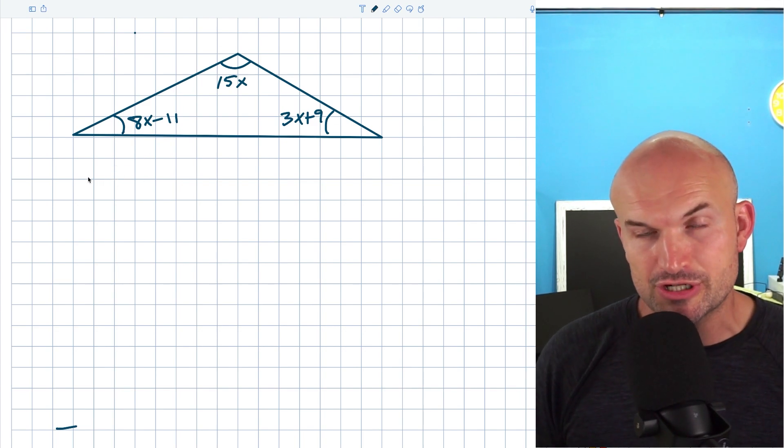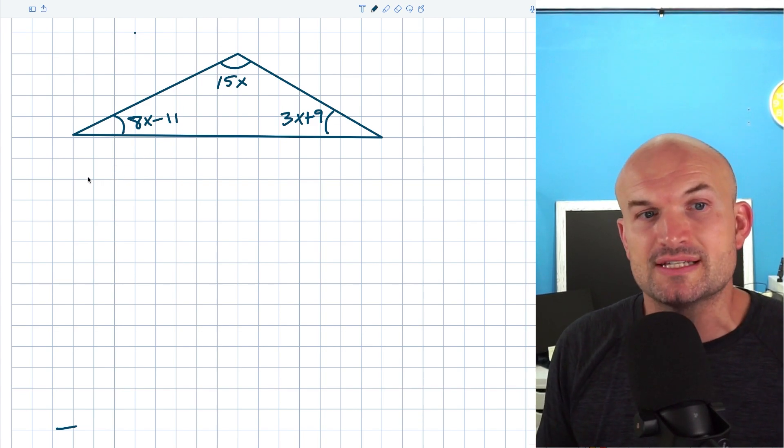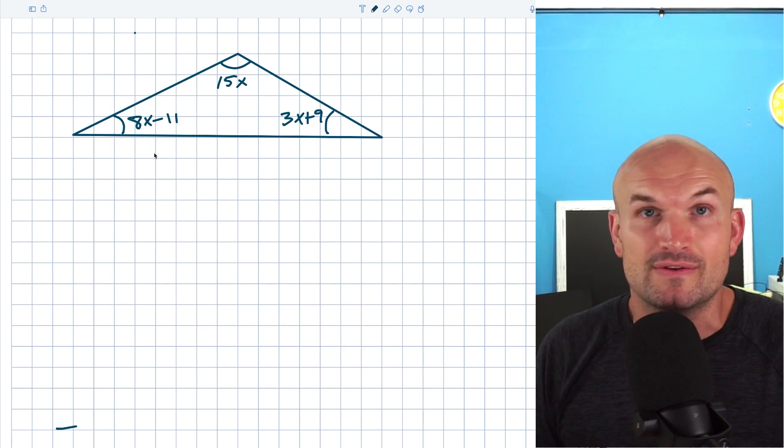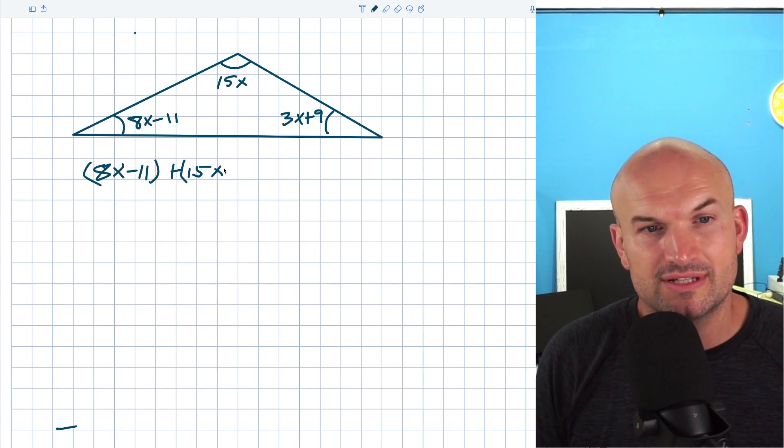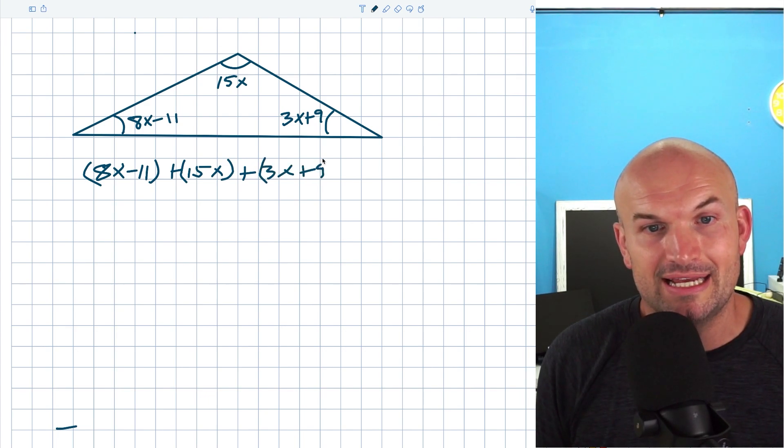Typically when I first write the relationship or when I'm first having students do this, I'll have them use parentheses just so they can see that they're writing the equation correctly. So in this example, I'll have (8X - 11) plus (15X) plus (3X + 9), and that's going to equal 180 degrees.